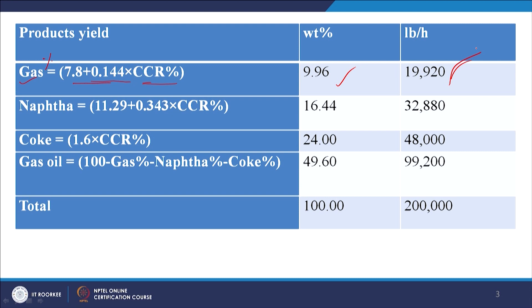For naphtha, the empirical formula gives: 11.29 + 0.343 × CCR weight percent. Putting CCR = 15, we get 16.44 weight percent naphtha, which corresponds to 32,880 pound per hour.